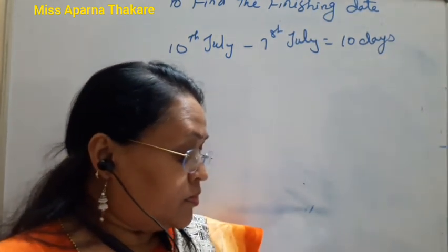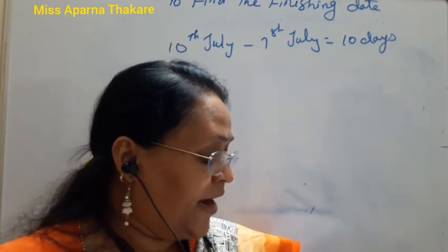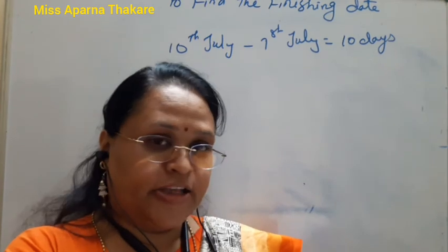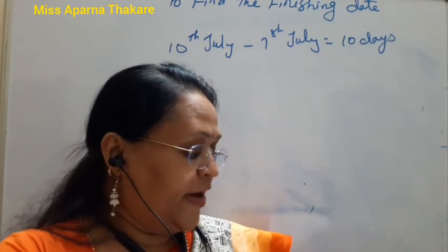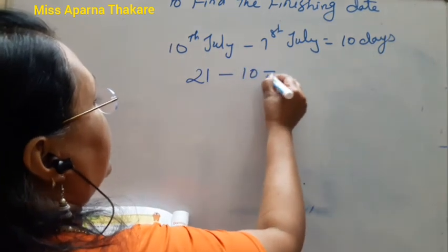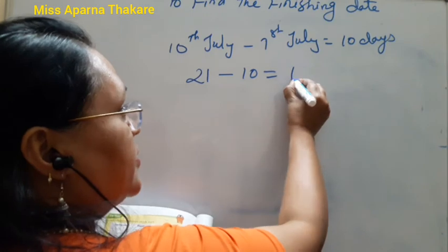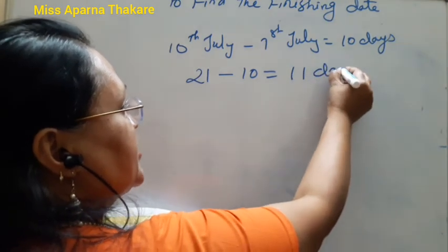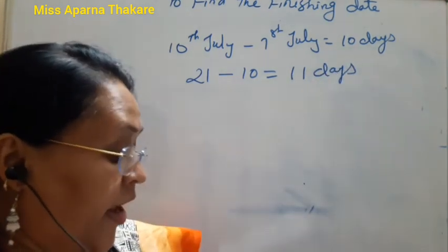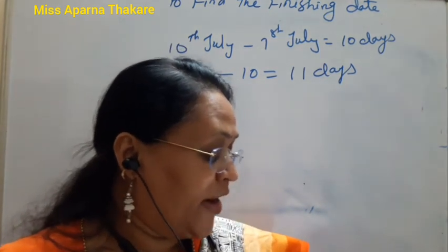We need to count back 21 days. From 10th July back to 1st July is 10 days. So 21 minus 10 equals 11 days remaining. 11 days before 1st July takes us to 20th June.